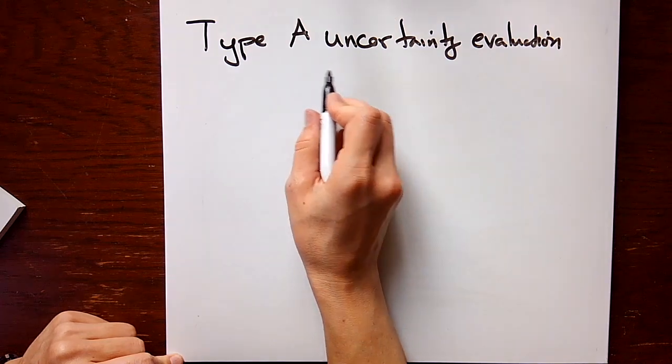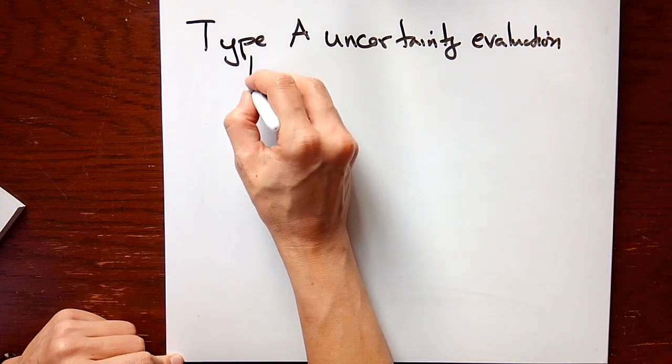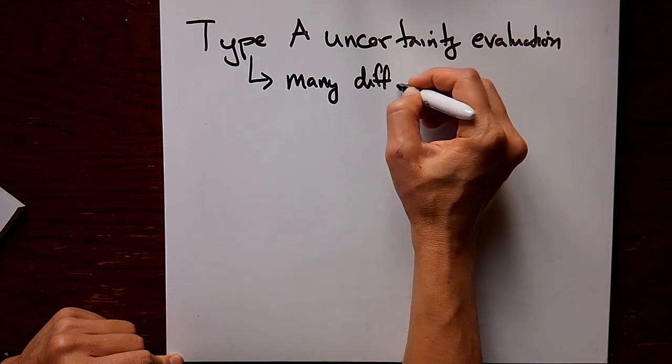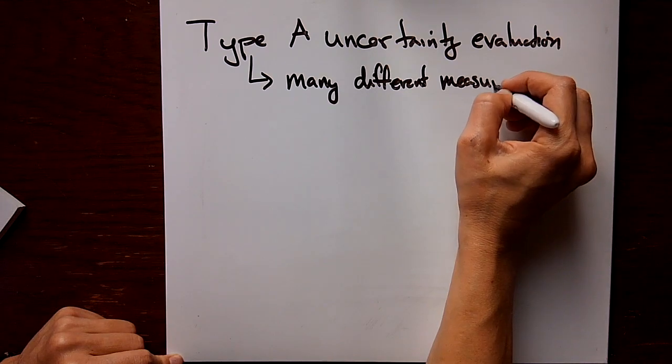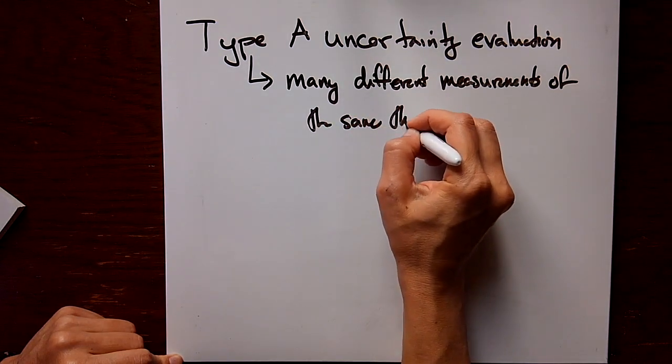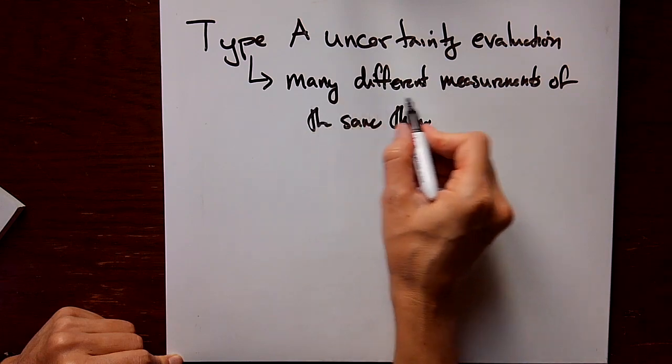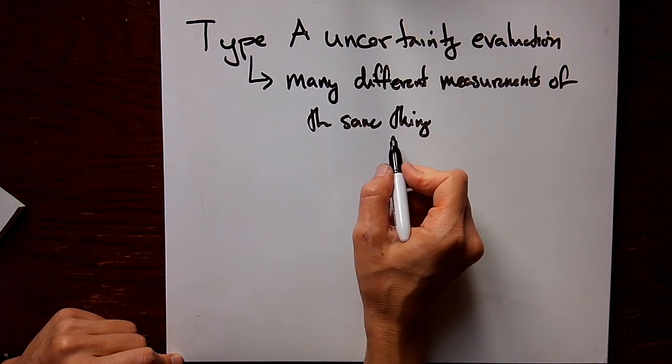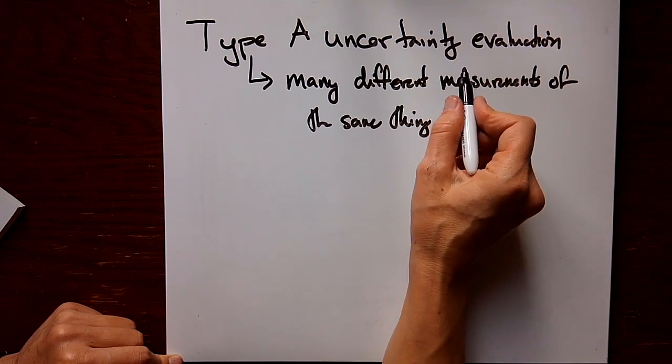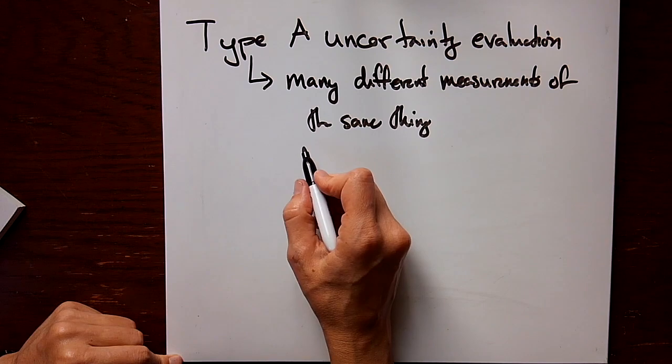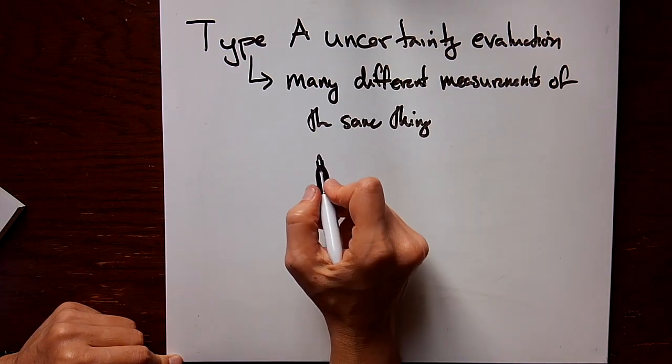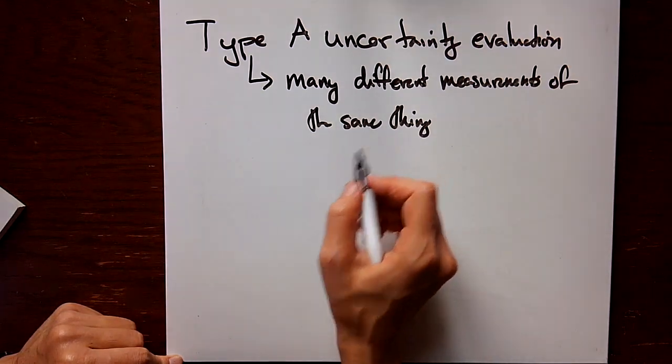Now we're going to look at a Type A uncertainty evaluation and how you would make that. Remember Type A is associated with many different measurements of the same thing. This is only interesting if those different measurements all give you different results. If you measure the same thing and you get the same result over and over again, you don't really have a big Type A uncertainty. So you're going to have to go to Type B evaluation to figure out the precision of how that measurement is being made.